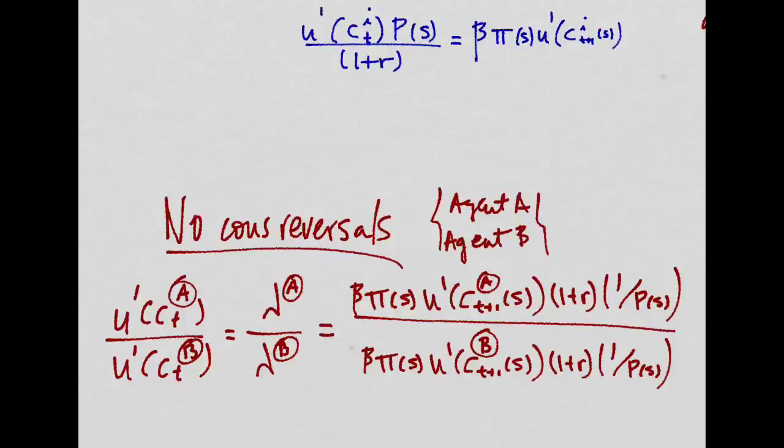Assuming complete markets also tells us that there will be no consumption reversals. That means that, take for example, Agent A and Agent B. If Agent A has more consumption than Agent B at some period T, then he will always have more consumption levels than Agent B. Why is that?